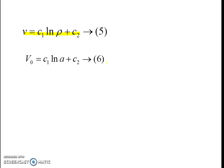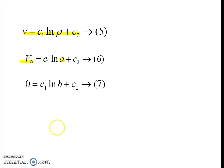Now we use the boundary conditions to determine c1 and c2. The first boundary condition is V = V0 when rho = a, giving equation 6. The second boundary condition is V = 0 when rho = b, giving equation 7. Using equations 6 and 7 together, we will be able to obtain c1 and c2.